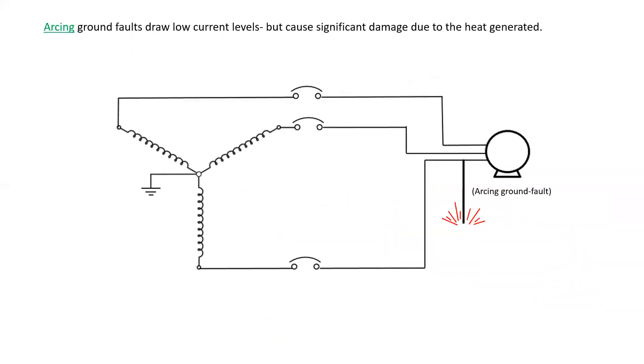Arcing ground faults draw low current levels, but cause significant damage due to the heat generated. If only 2 amps is flowing, there's no way that the breaker will trip because it has not met the minimum threshold for the breaker rating.